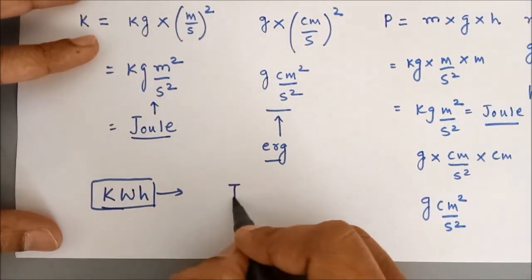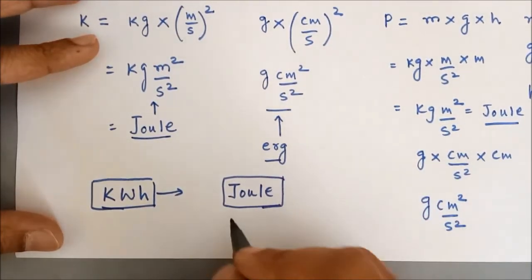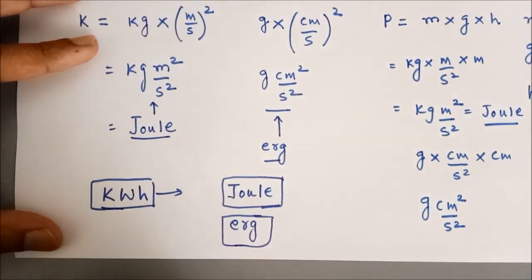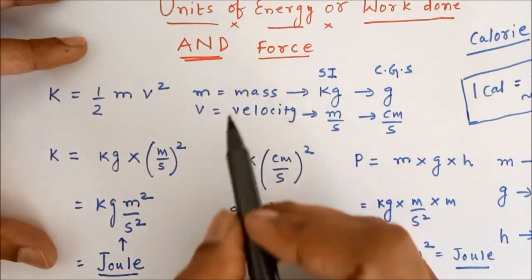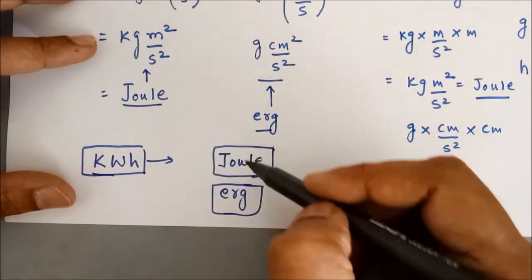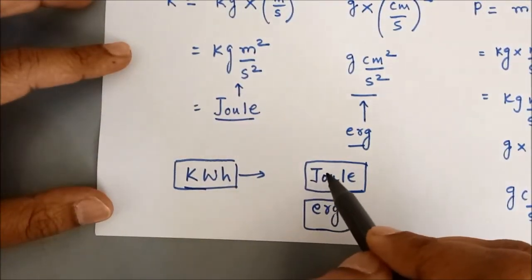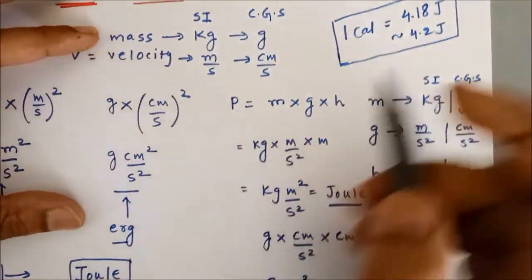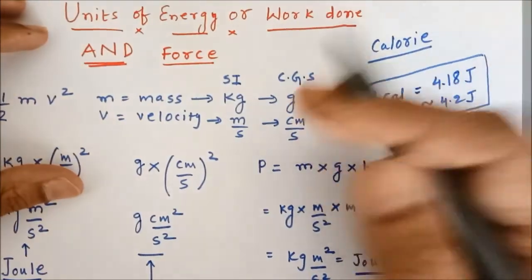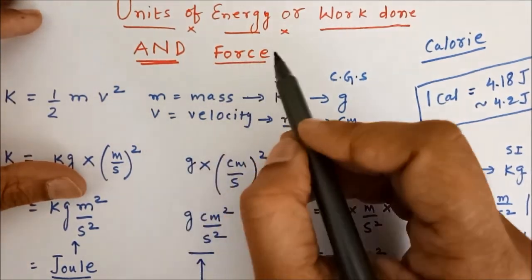So, joule is the SI unit of energy or work whereas erg is CGS unit of work. In the later part of the video we are going to study about the conversions of one unit into another one like how can you convert joule into erg, how can you convert kilowatt hour into joule and so on. And this has to be actually remembered because this was experimentally performed. And in the later part of the video we are also going to study about the different units of force and its formulas.